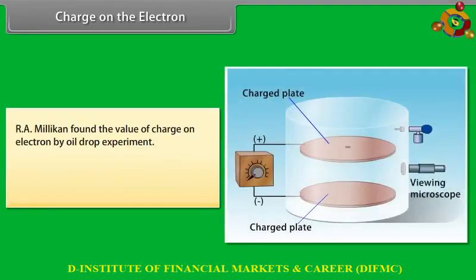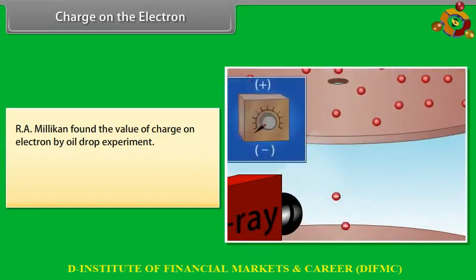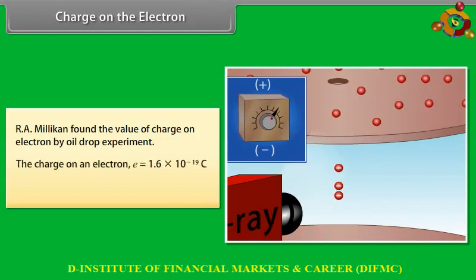Charge on the electron: R.A. Millikan found the value of charge on the electron by the oil drop experiment. Oil droplets enter the apparatus through a small hole and fall between two charged plates. The motion of the droplets is observed with a microscope, and the space is irradiated with X-rays which ionize air molecules. The charge on an electron e is equal to 1.6 × 10⁻¹⁹ coulomb. The mass of the electron mₑ is equal to 9.31 × 10⁻³¹ kilograms.